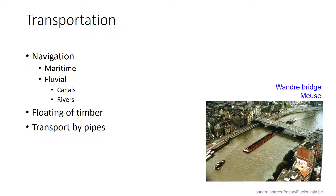The key use is navigation, as we can see from this picture of the Meuse river. This river is in fact completely engineered and adapted in order to promote navigation and to ensure a sufficient water depth all year long to allow for the passage of different types of vessels.